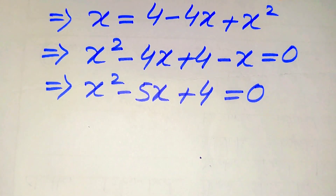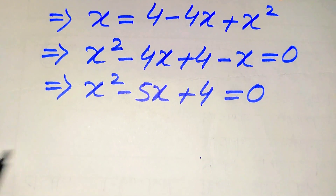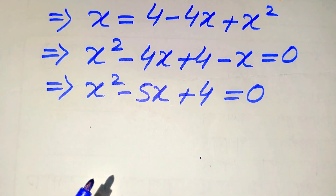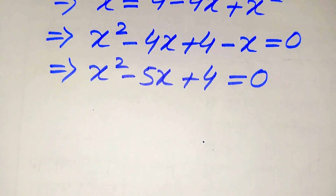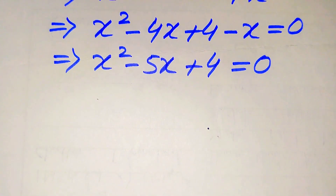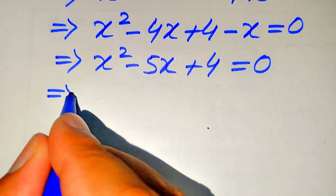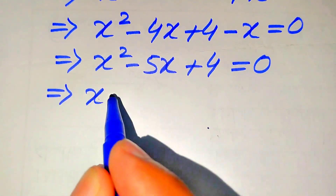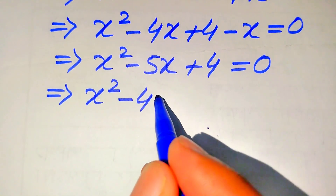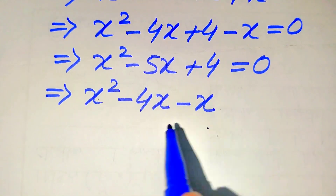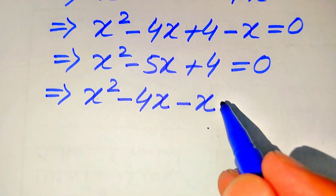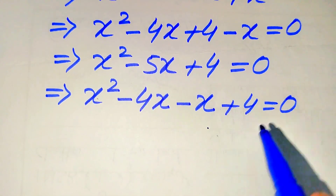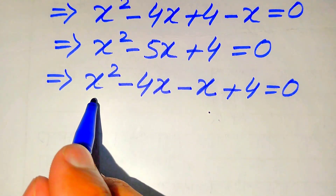This is a quadratic equation in x. There are three methods to solve a quadratic equation: factorization, completing the square, or the quadratic formula. Here we can easily make the factors. We break the middle term: minus 5x is written as minus 4x minus x, so we have x squared minus 4x minus x plus 4 equals 0.